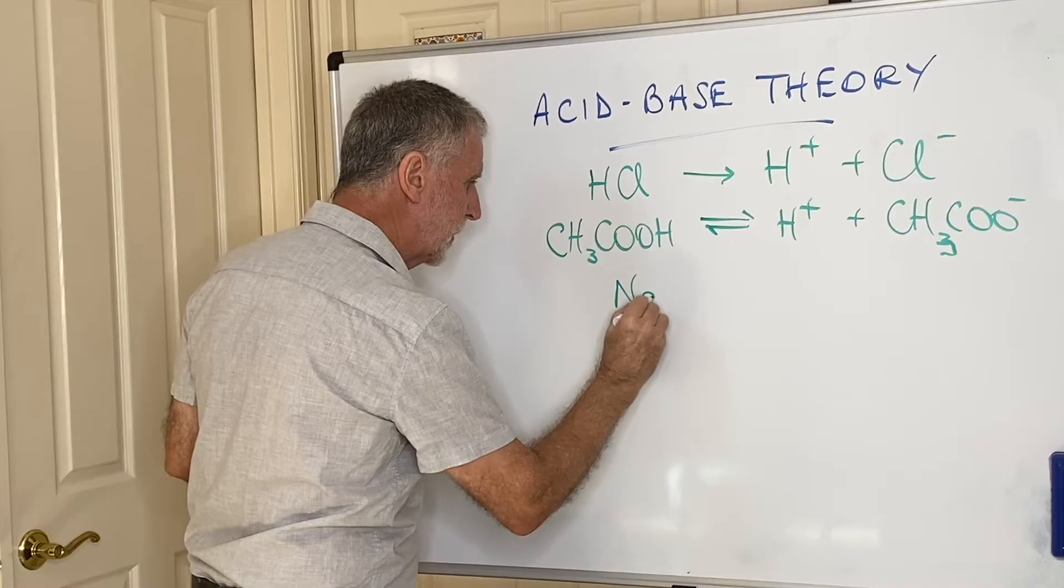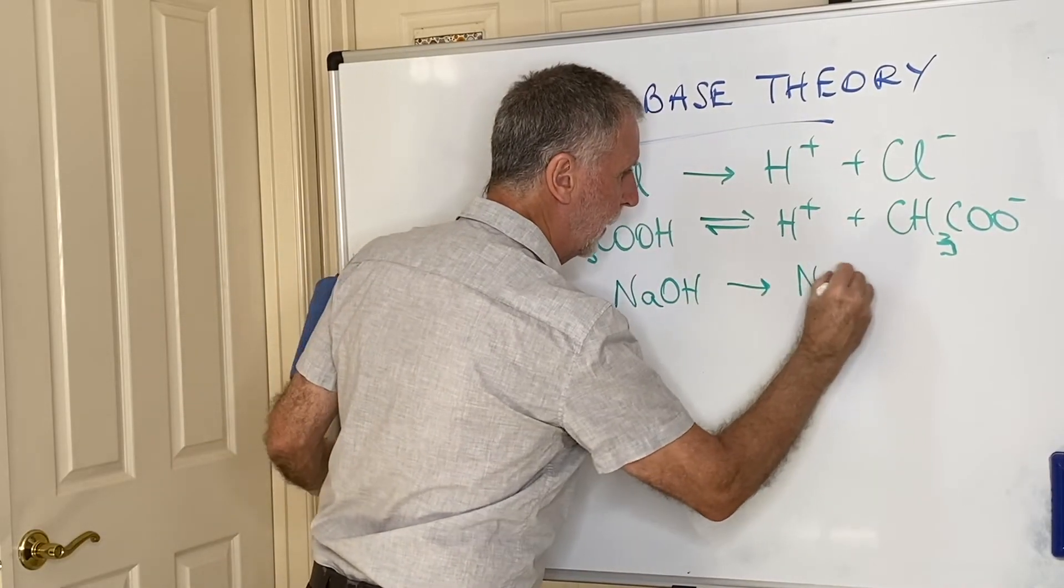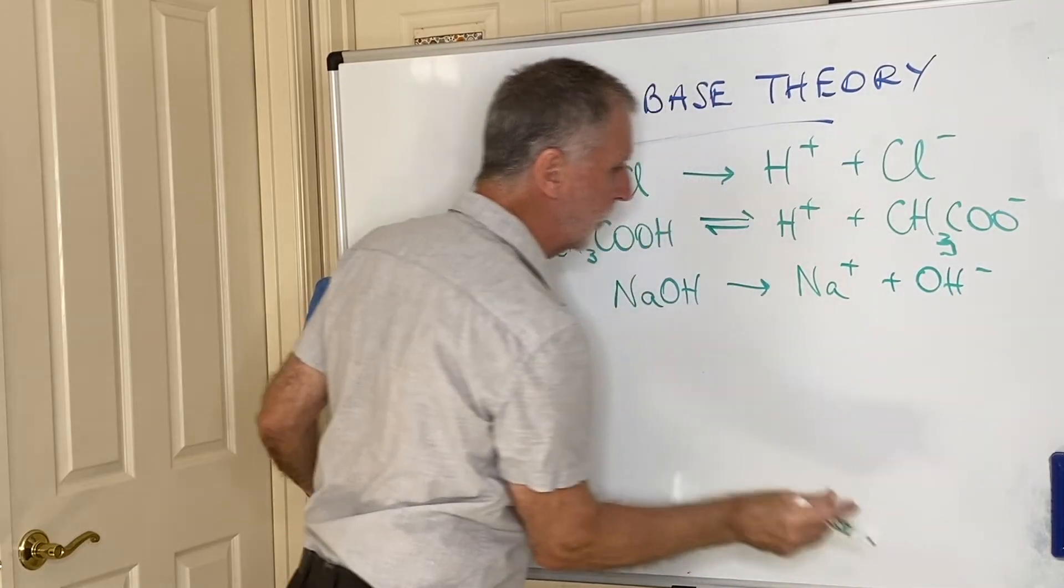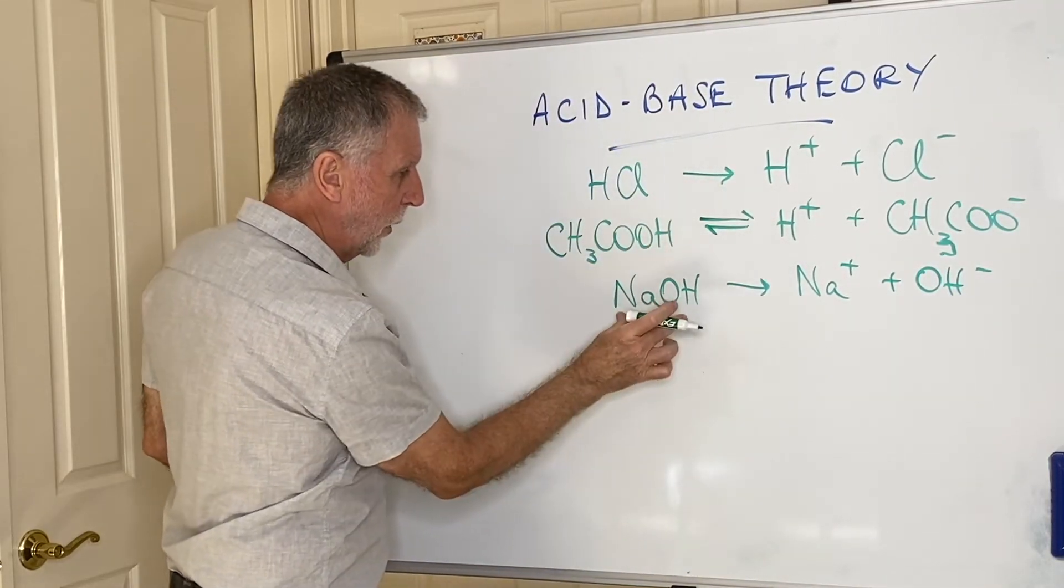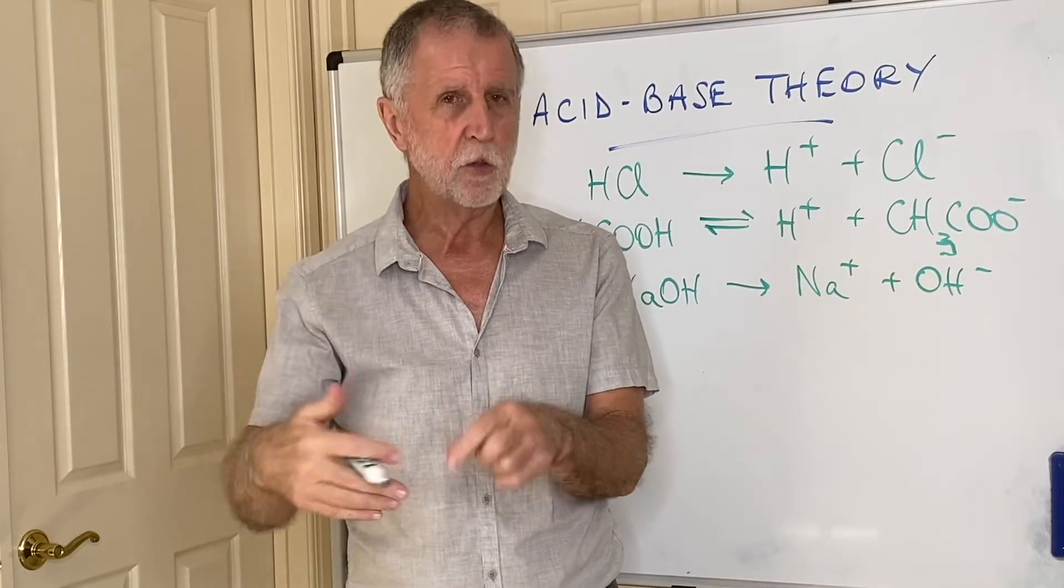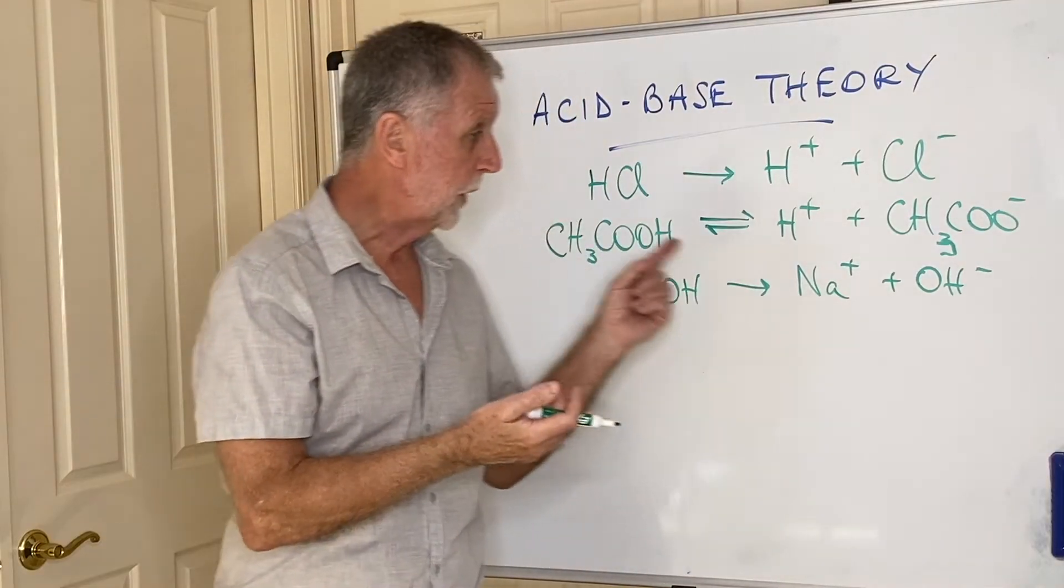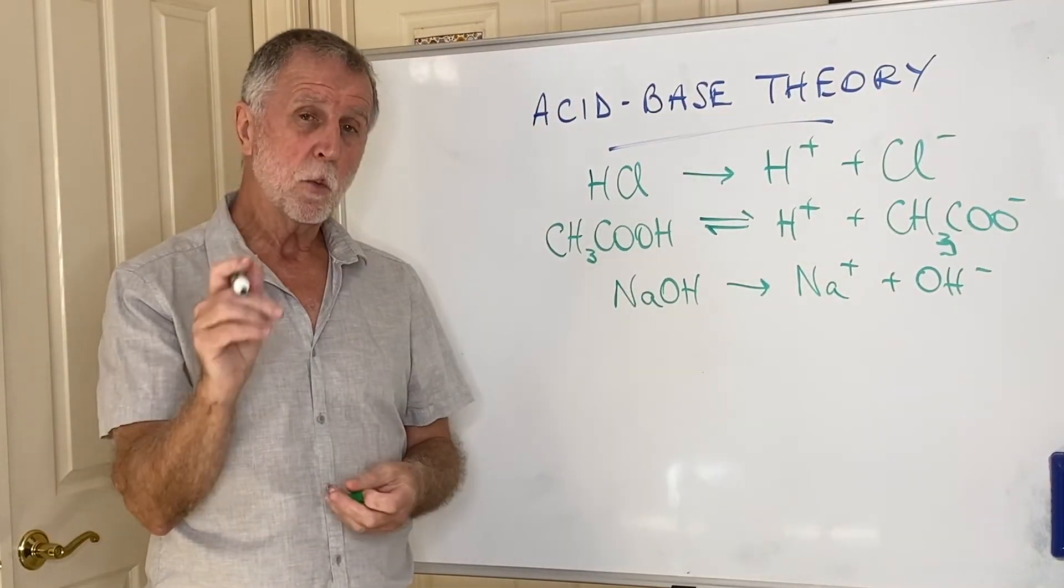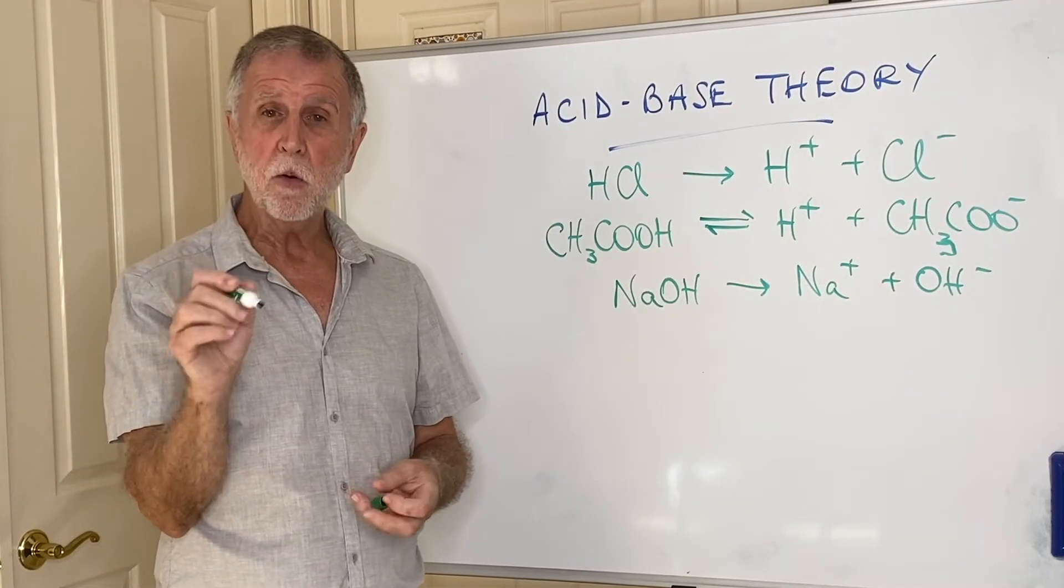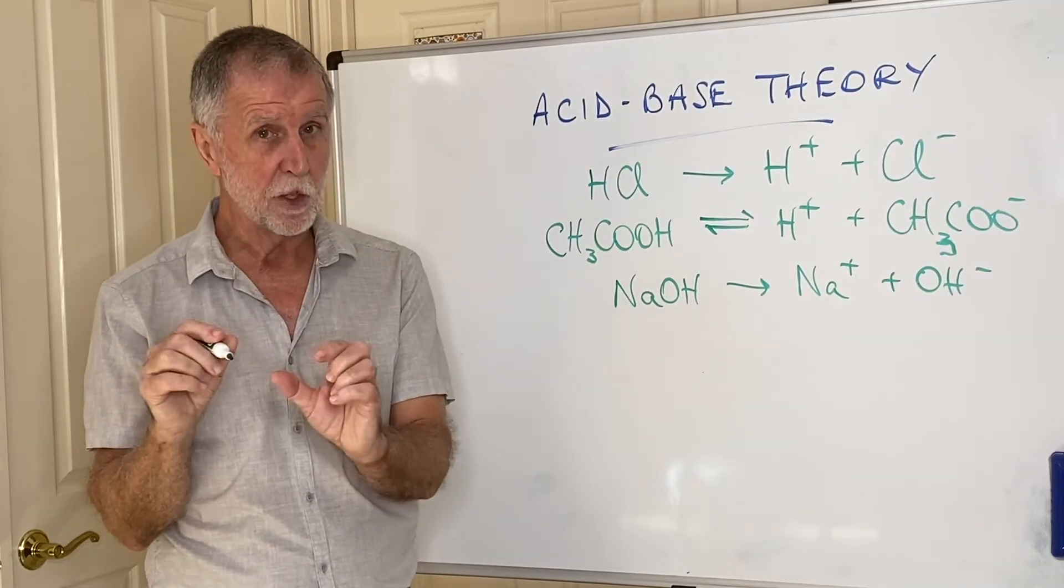So that's an example of a strong acid and a weak acid, but they also expect you to know bases. Now, sodium hydroxide is the classic example of a strong base. Again, it dissociates 100% when you put it in water. You also should be aware that the other members of group one, lithium hydroxide, potassium hydroxide, all of the group one hydroxides are strong bases. And the other one they mention as a strong base is barium hydroxide, which is pretty low down in group two. You need to know they are strong bases.